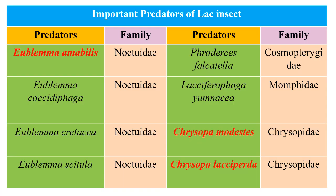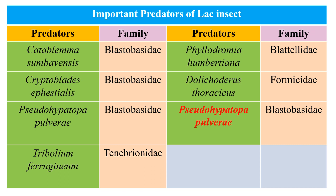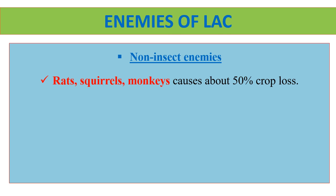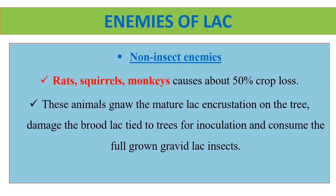From the table, E. amabilis belongs to family Noctuidae and Chrysopa species belongs to family Chrysopidae. P. pulveri belongs to family Blastobasidae. Apart from insect enemies, there are also some vertebrates which are enemies of lac. These are rats, squirrels and monkeys, which cause about 50% crop loss. These animals damage the lac encrustation on the tree, damage the brood lac tied to trees for inoculation, and consume the full-grown gravid lac insects.